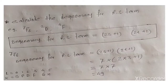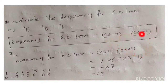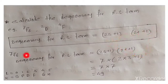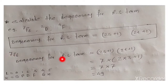Now calculate the degeneracy for the RS term — the Russell-Saunders term. It may be ⁷F, ²D, or ⁹F. The degeneracy for the RS term has the formula (2S+1) times (2L+1). Taking the example ⁷F: the spin multiplicity 2S+1 equals 7, so we take 7.